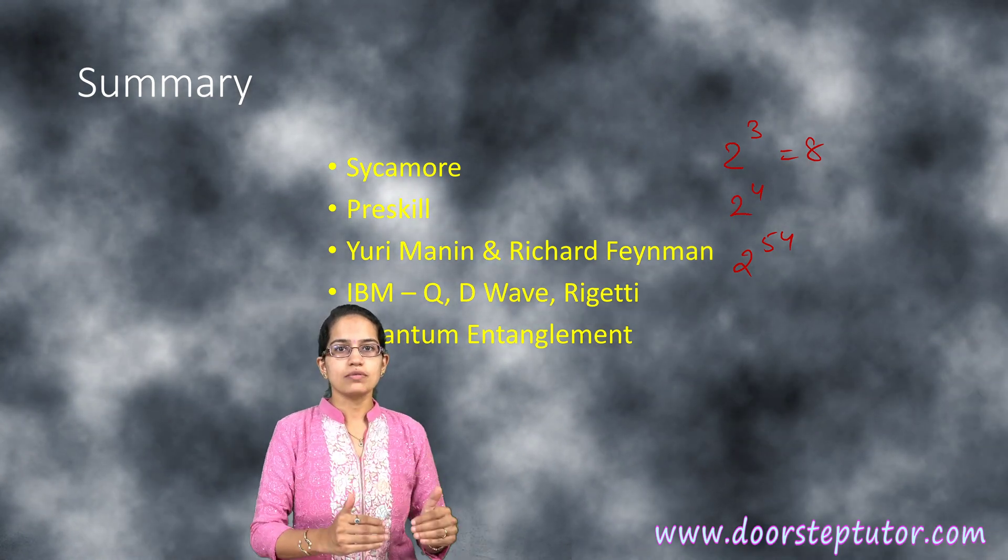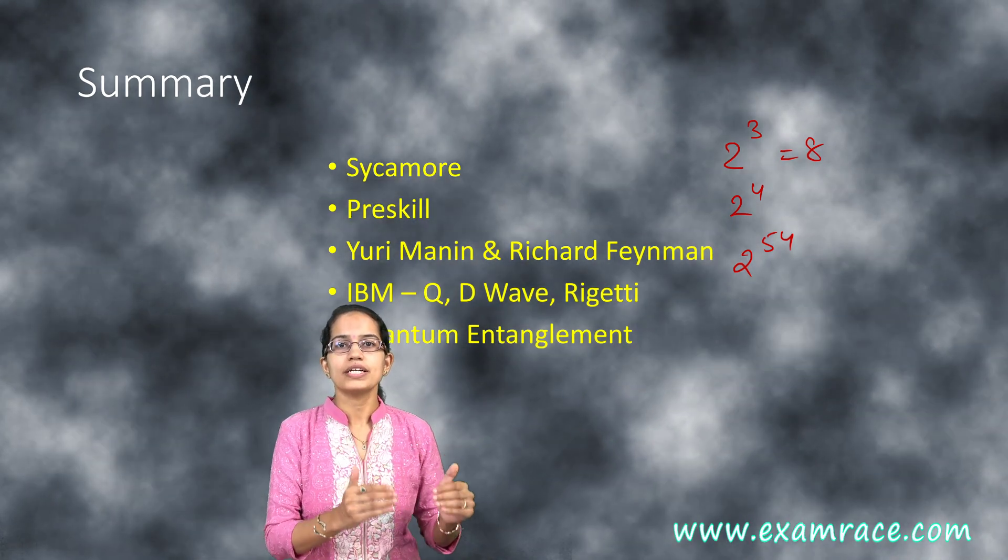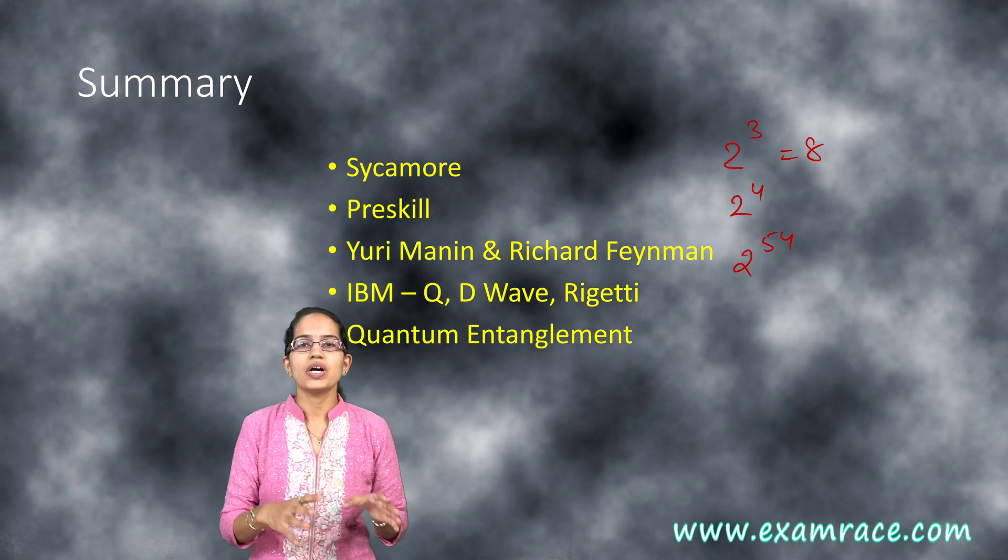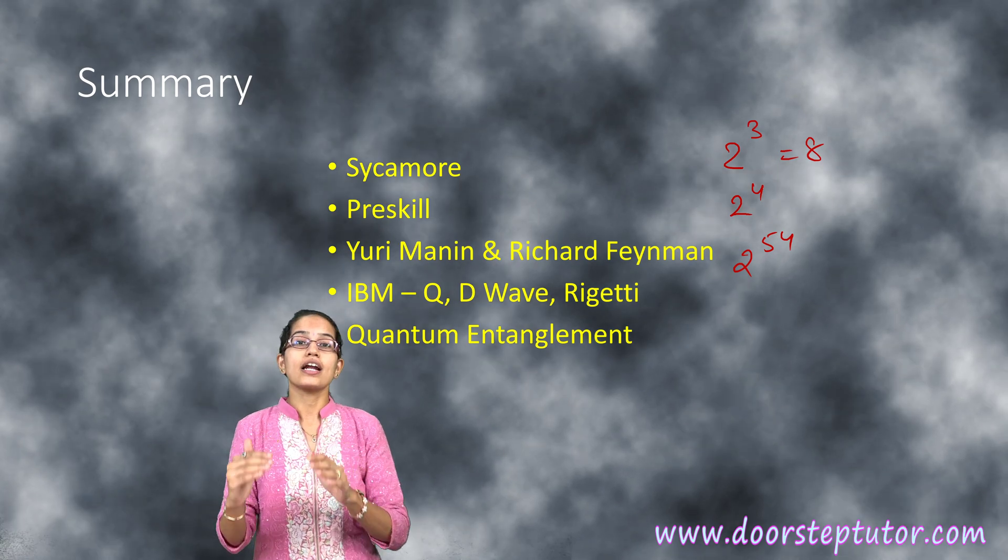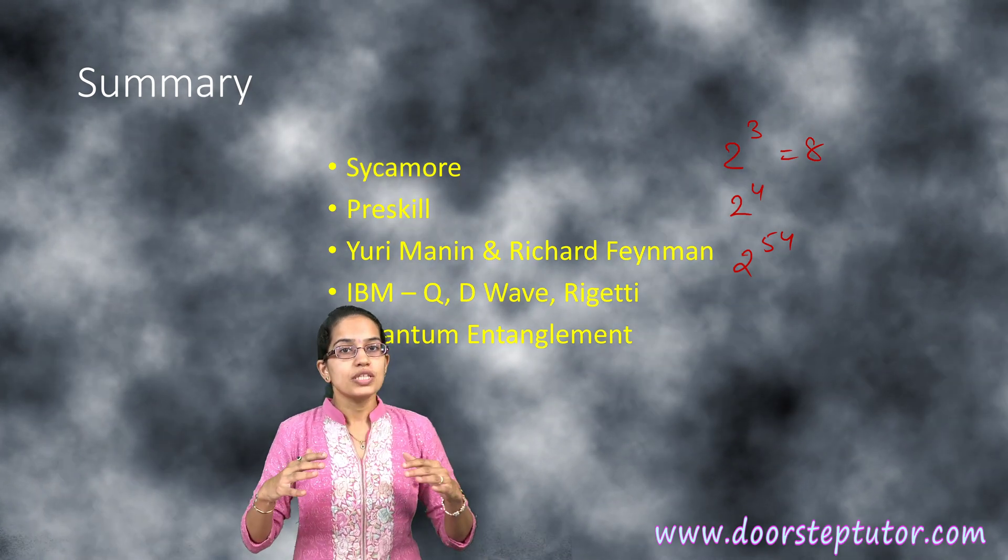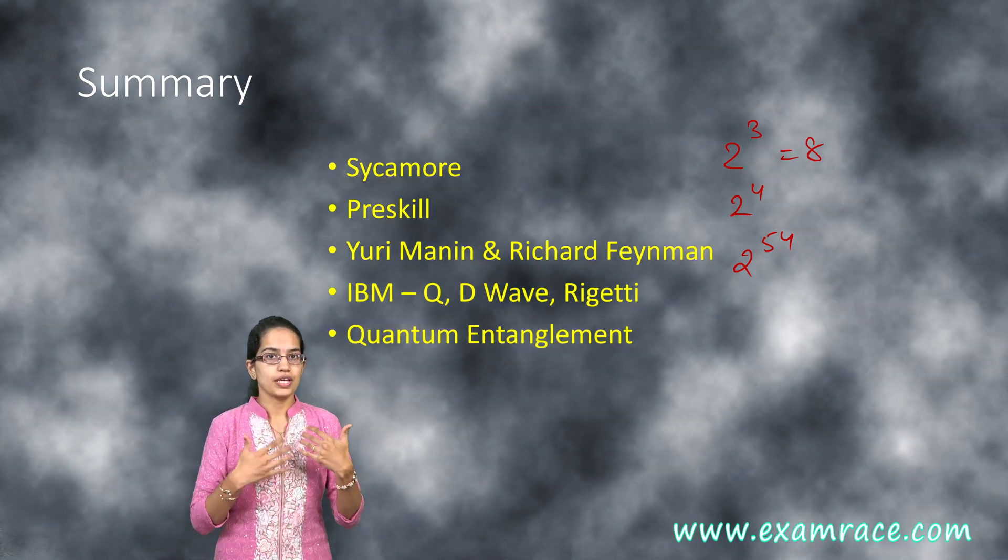The Sycamore problem was solved by a qubit in 200 seconds. However, if the same problem was given to a normal computer, it could take around 10,000 years. This is the kind of development we are thinking about.